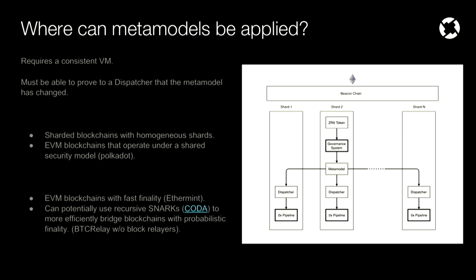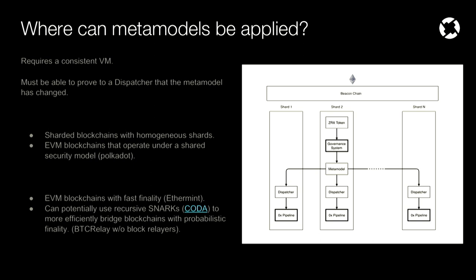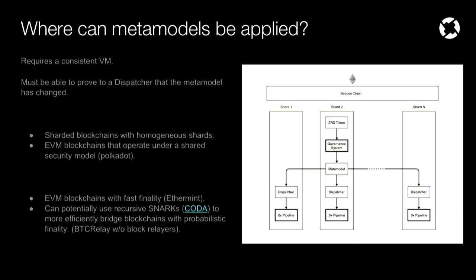There are certainly some constraints around when and where this framework can be applied. We have to have the same exact virtual machine running on any shard or blockchain that wants to have this kind of metamodel approach. More generally, we must be able to prove to a dispatcher contract that the metamodel has changed. With a sharded blockchain with homogeneous shards, it's pretty simple — all shards have the same exact virtual machine, and proving to the dispatcher that the metamodel has changed is really just an asynchronous cross-shard call. So it's pretty straightforward.